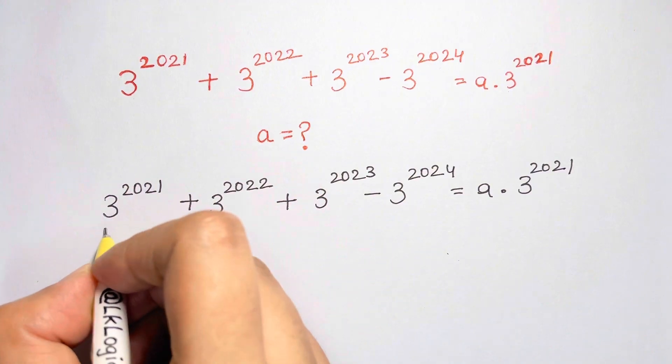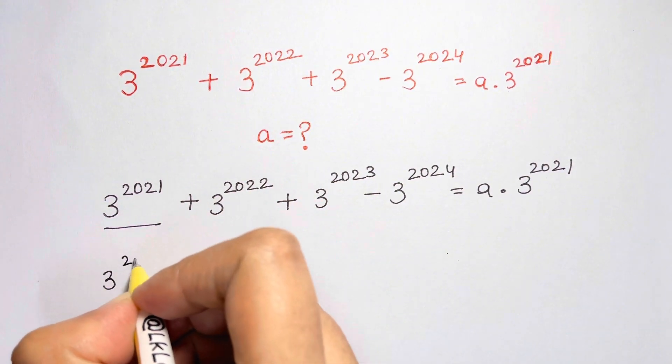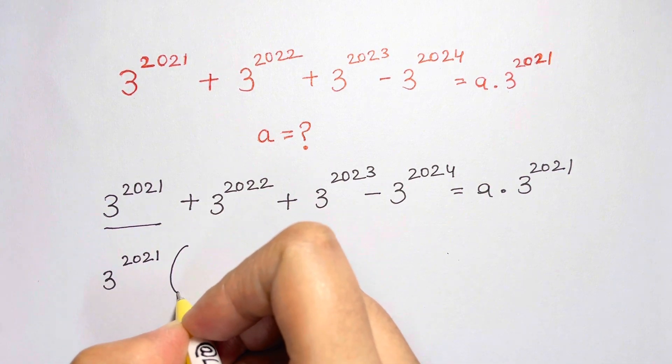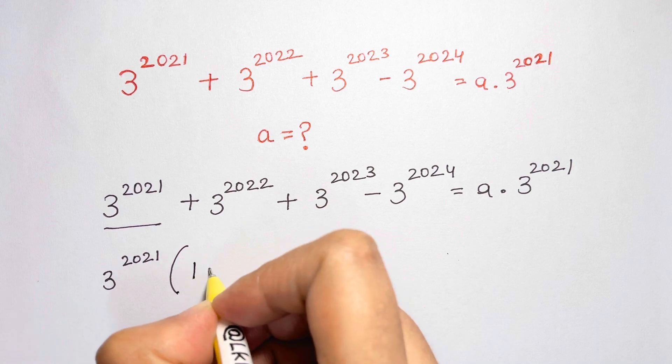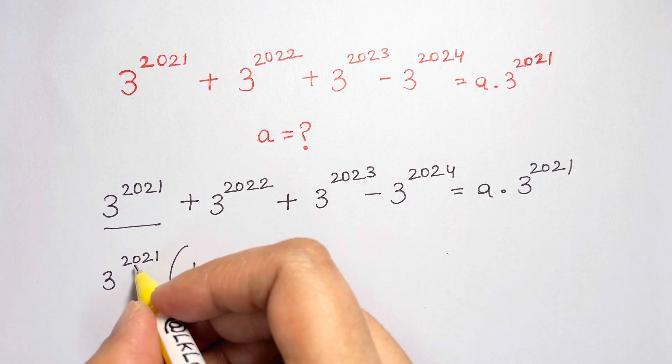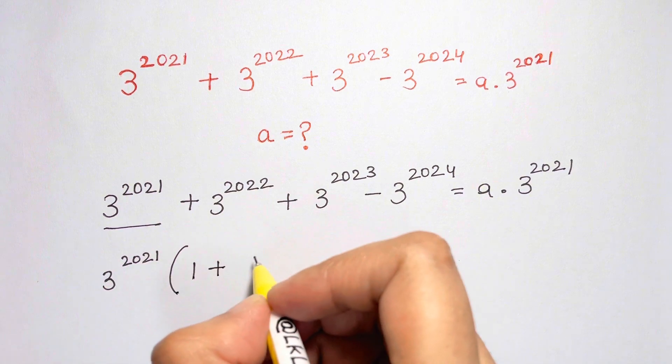What we do here is take 3 to the 2021 common outside of the parenthesis. We open the parenthesis, we divide the first term by this term, we get 1. Then 3 to the 2022 divided by this, we get 3 to the power of 1.